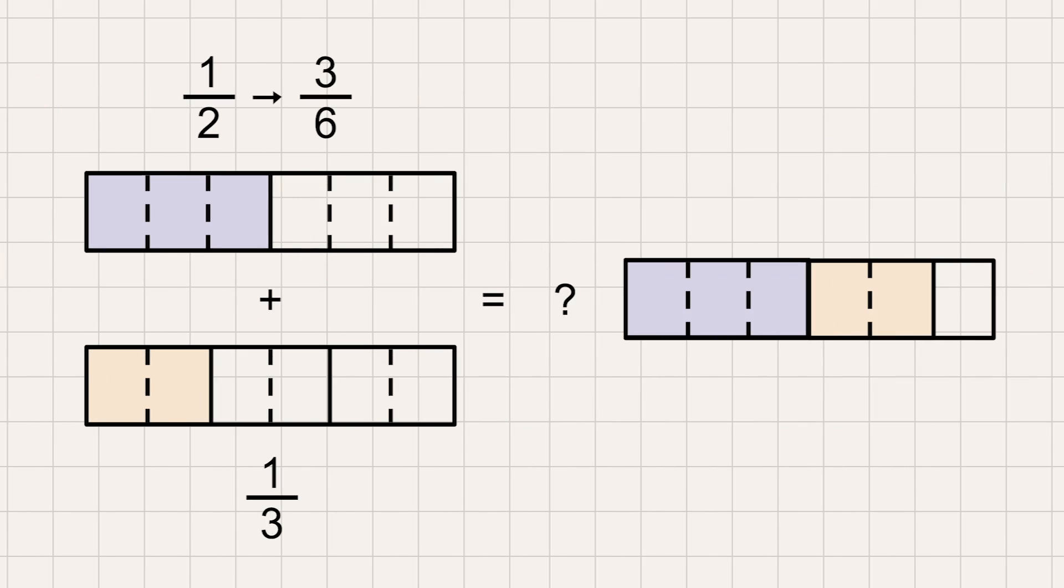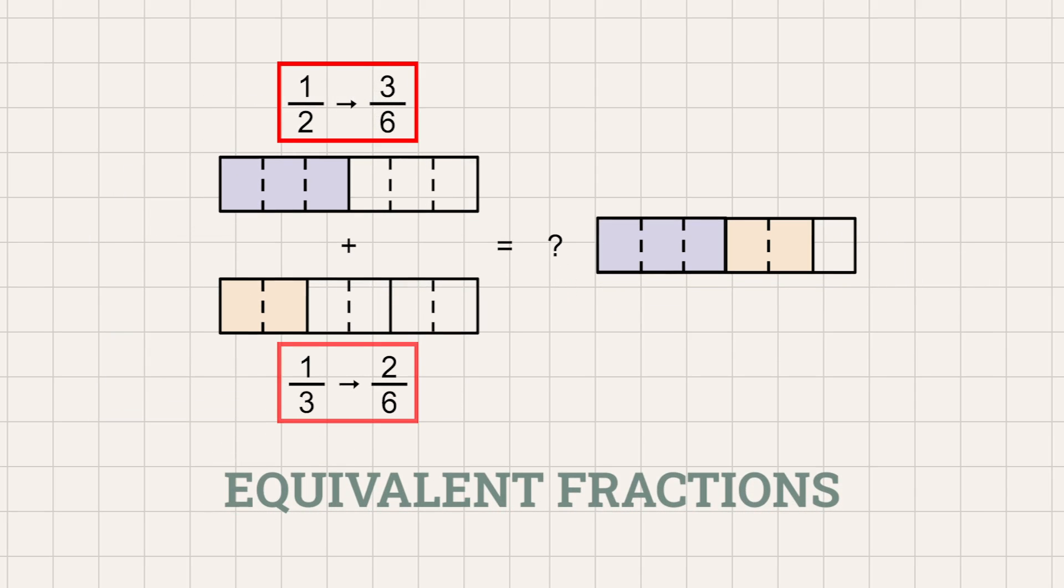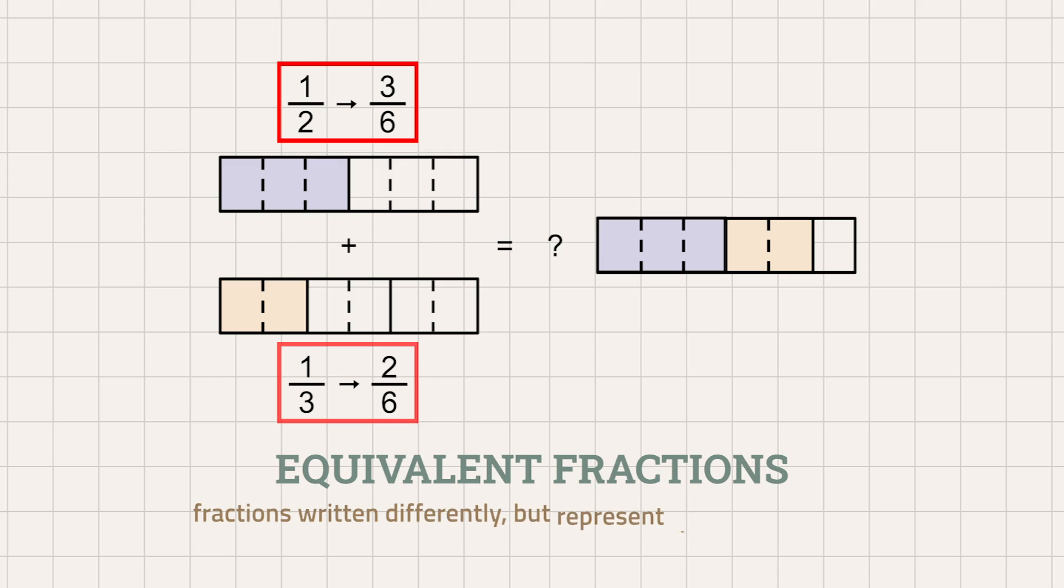That means the whole should be cut up into six parts. What used to be one-half is now the same as three-sixths, while one-third is now the same as two-sixths. Remember that these are equivalent fractions. Equivalent fractions are fractions written differently but represent the same quantity.